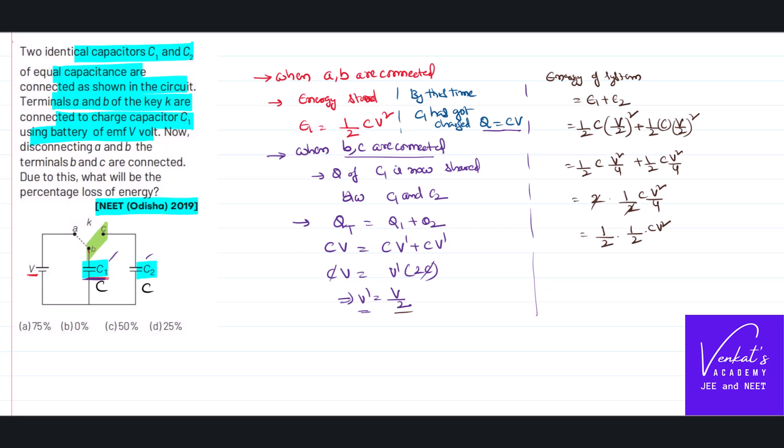But 1 by 2 CV square, this E dash, is nothing but initial energy. So you can say E dash is half times of E1. It has only half the energy present, means half the energy is obviously lost. That means...